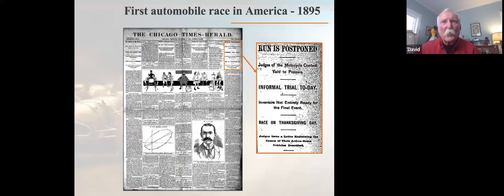Well, fast forward to the very morning of Saturday, November 2. The Chicago Times Herald front page reads: race is postponed, judges of the motorcycle contest yield to pressure. I'll explain motorcycle in a moment. Informal trial today. Inventors not entirely ready for the final event. Of 83 inventors working on vehicles, less than a handful were ready. So the contest gets postponed again until Thanksgiving Day, November 28.